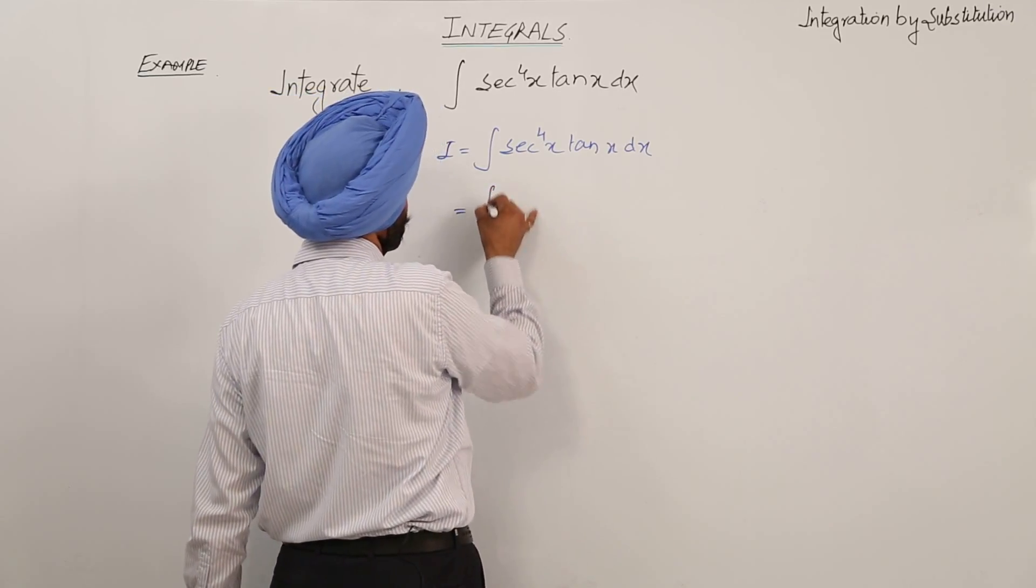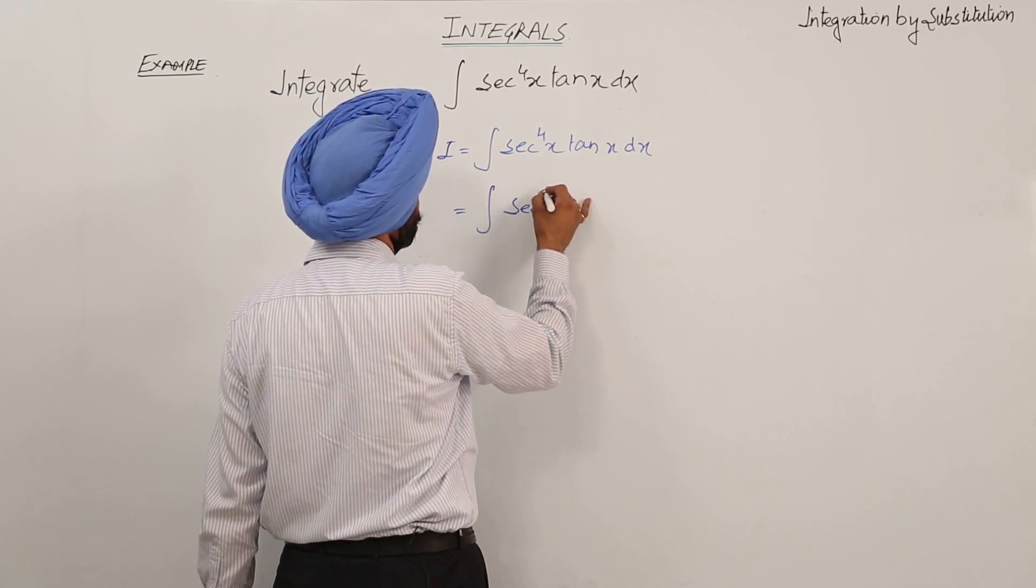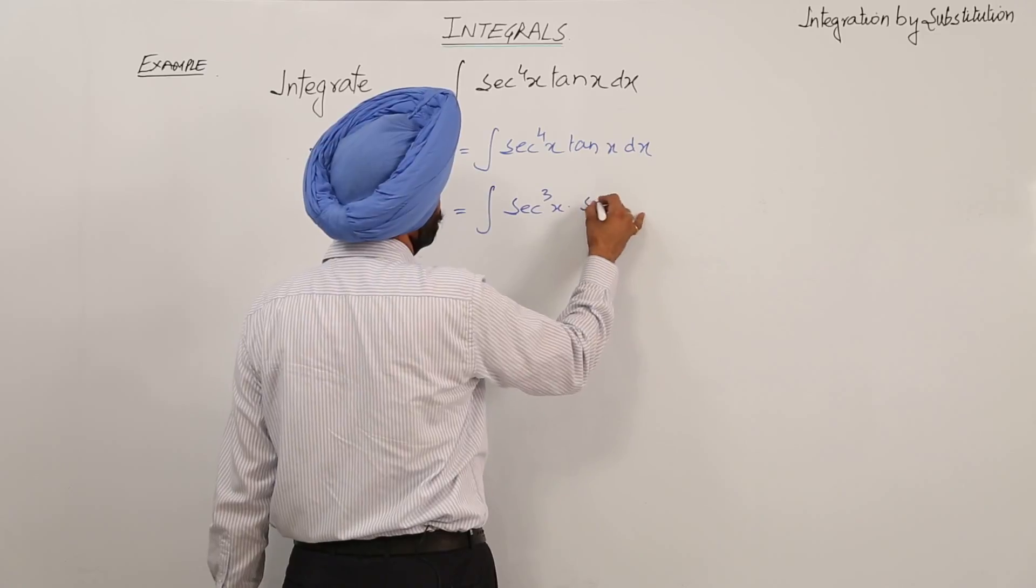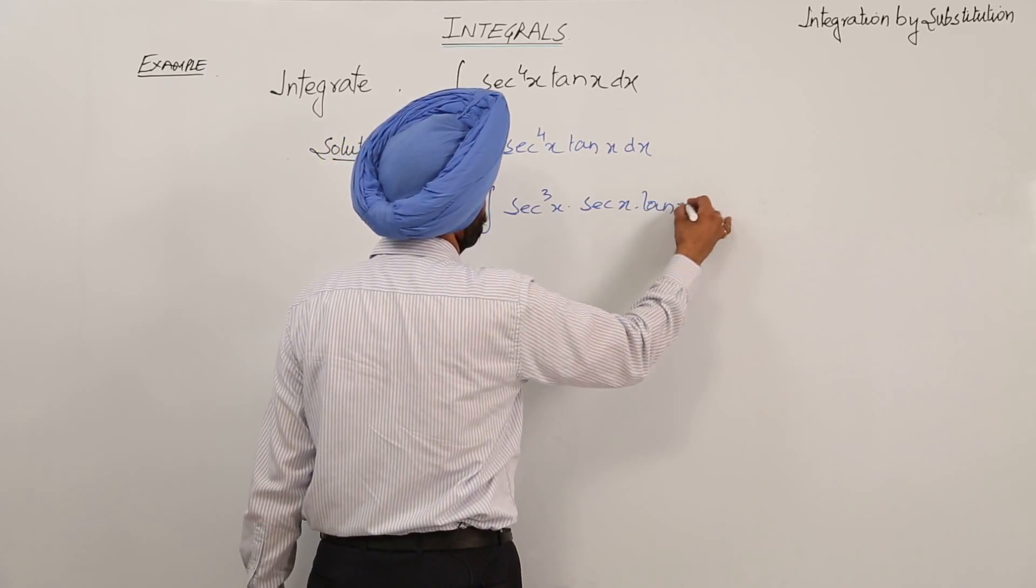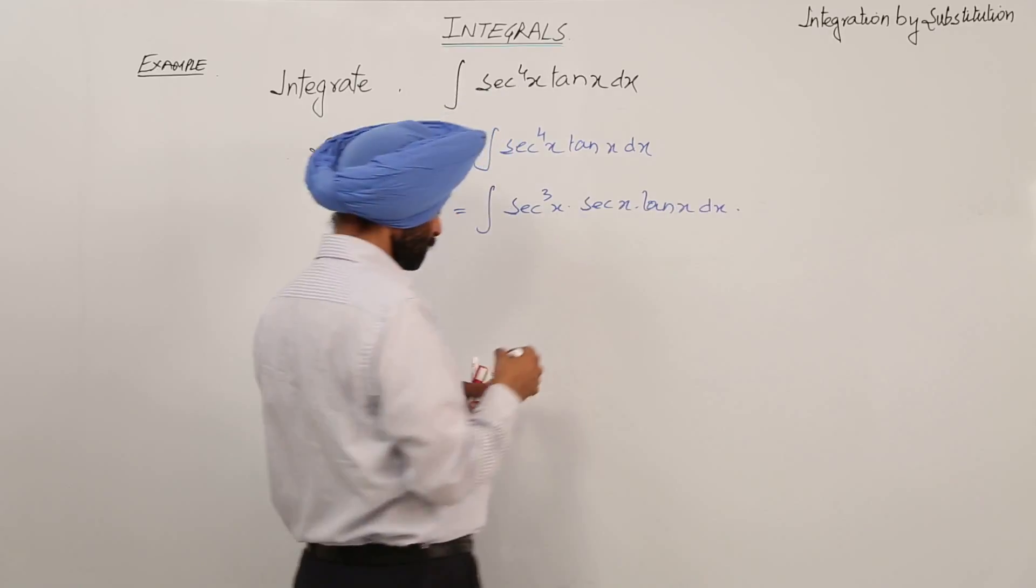So now we can write it as secant cube x with secant x tan x dx.